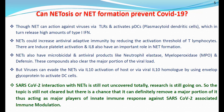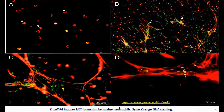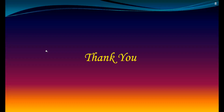I have come to the end of my presentation. This picture is an electron microscopy image of E. coli P4 phage toxin-induced NET formation by bovine neutrophils, stained with SYTOX or immunofluorescence staining. You can see this mesh-like structure — the neutrophil extracellular trap — and the yellow-colored structures are the E. coli P4 phage toxins being caught up by the NET. The maximum pictures were taken from 'NETosis: Immunity, Pathogenesis and Therapeutics' by Gita Rai. These are the references. Thank you, and that's all.